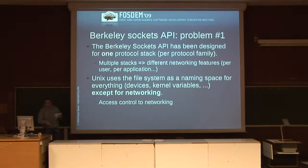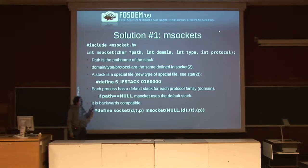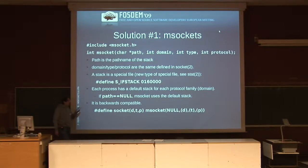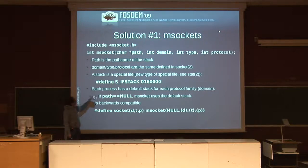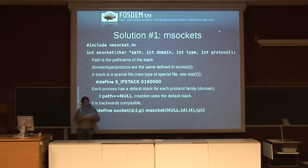This is another problem we want to solve, and the solution is named msockets — multi-sockets. Our proposal defines a new kind of special file called "ifstack". In this way, the standard access control methods applied to files can also be applied to networking stacks. msocket is a new system call similar to socket but with one more parameter — the first one — which is a path name that identifies the stack special file we want to use.